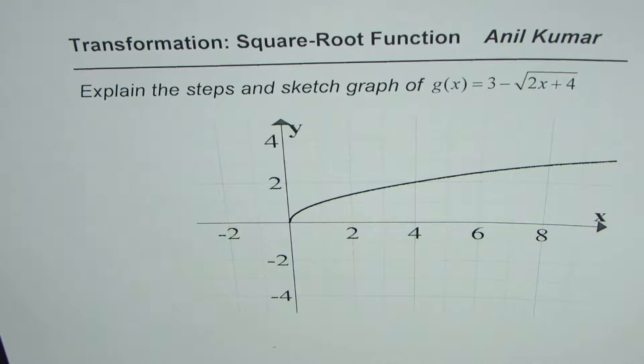I'm Anil Kumar. In this set of videos we are discussing how to sketch transform functions. Now let us work with square root function. The question here is: explain the steps and sketch graph of g(x) equals 3 minus square root of 2x plus 4.